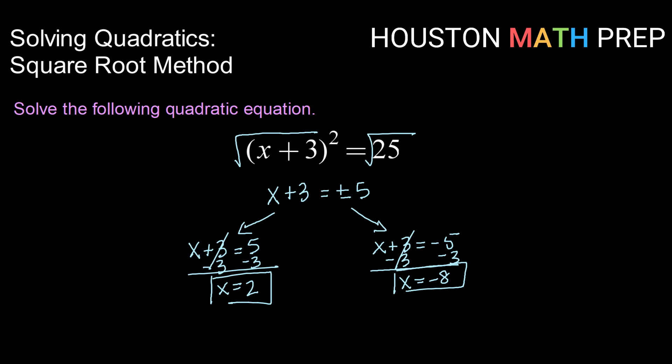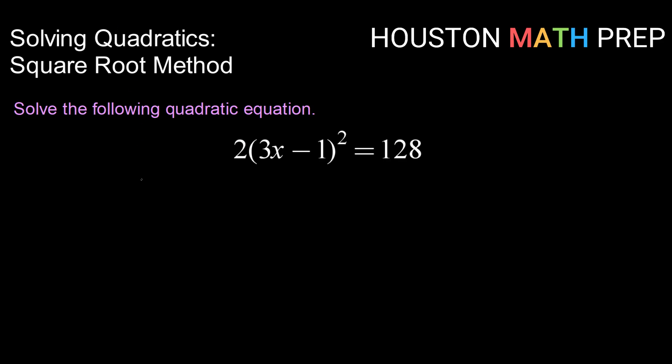Alright, let's try that method again. Here we're not quite all the way to having our squared items isolated. So the first thing we're going to want to do is isolate those squared items. I'm going to do that by dividing by 2. That leaves me with 3x minus 1 quantity squared equals 128 divided by 2 gives me 64.